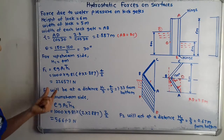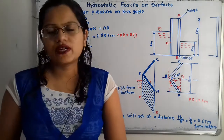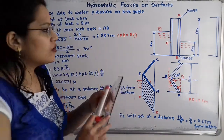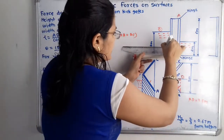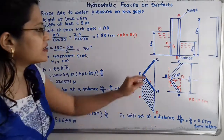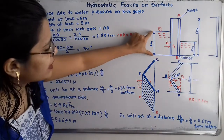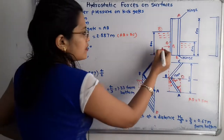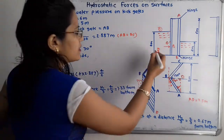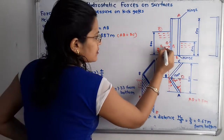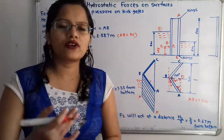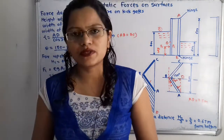Force F1 will act at a distance of H1/3 from the bottom. The location of force F1 is at the center of pressure, point P1. This is H1/3 = 4/3 = 1.33 meters from the bottom. So force F1 acts at 1.33 meters from the bottom.